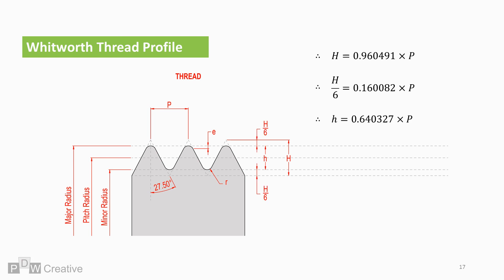Distances and relationships between major, minor, and pitch radius can be found by partitioning H. The crest to the peak of the triangle is H over 6. Root to base of the triangle is also H over 6. And the distance between minor and major diameters is lowercase h times 0.640327.